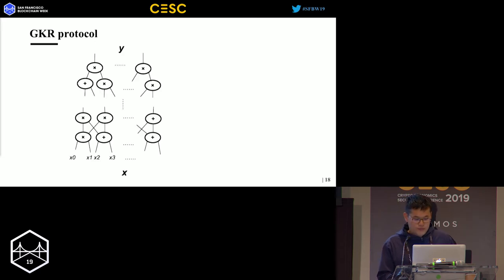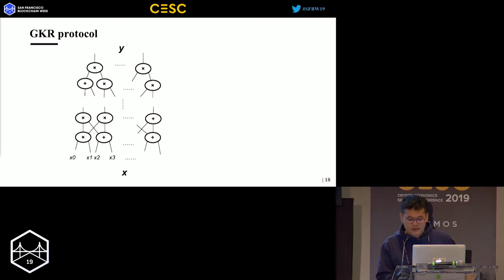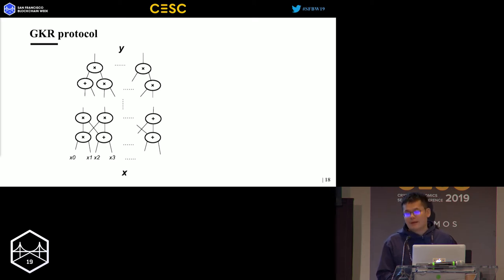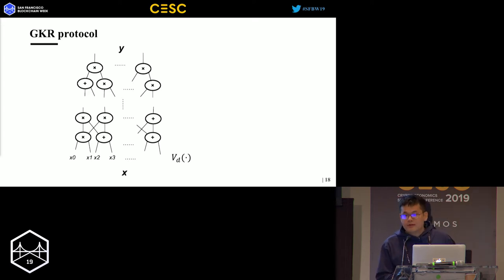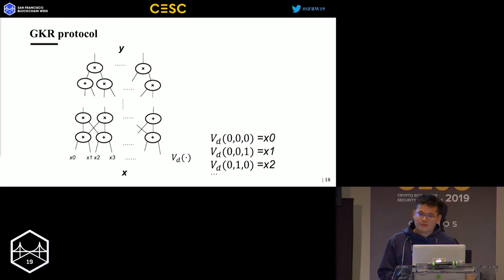The GKR protocol is based on an arithmetic layered circuit. Layered circuits means there are only connections between adjacent layers. Arithmetic circuits means the circuit only has addition gates and multiplication gates, with at most two input wires per gate. We let X be the input and Y be the output, and we define polynomial V_D according to the input gate values X0, X1, X2, and X3, using binary strings to represent indices from 0 to n.